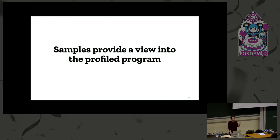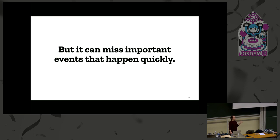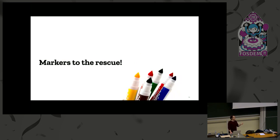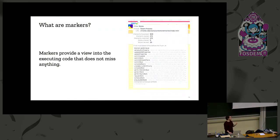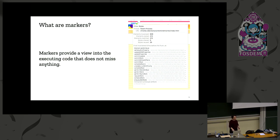As we learned, samples provide a view into the profiled program, but we can miss things that happen quickly — as with the first C call. So markers to the rescue. In addition to sample data, the profiler also has marker data. Markers are similar to samples in that they provide a view into executing code, but they don't miss anything because we manually add that information in the source code. We also include additional information — for example, the call stack plus additional styling data. This is a marker we add whenever new styling happens in a web page.